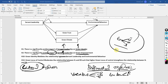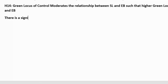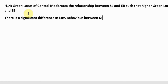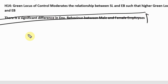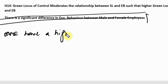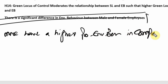Now, how do you write such a hypothesis? For example: 'There is a significant difference in environmental behavior between male and female employees.' Notice there is no direction in this hypothesis — you do not know whether males have higher environmental behavior or females have higher environmental behavior.